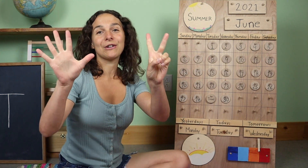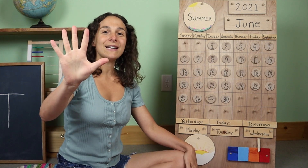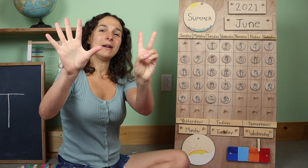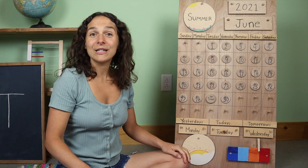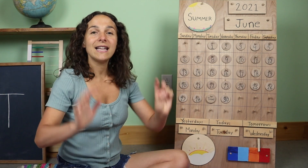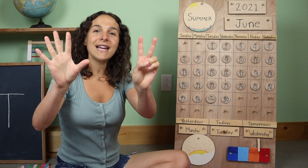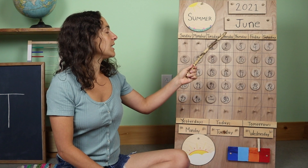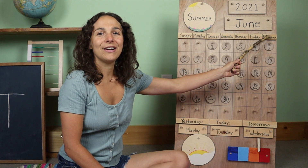Let's hold up seven fingers for the days of the week song. We'll start with one hand, but that's only five fingers. We need two more fingers like this to make seven. If you know the words, you can sing with me. There are seven days, there are seven days, there are seven days in a week. Sunday, Monday, Tuesday, Wednesday, Thursday, Friday, Saturday.